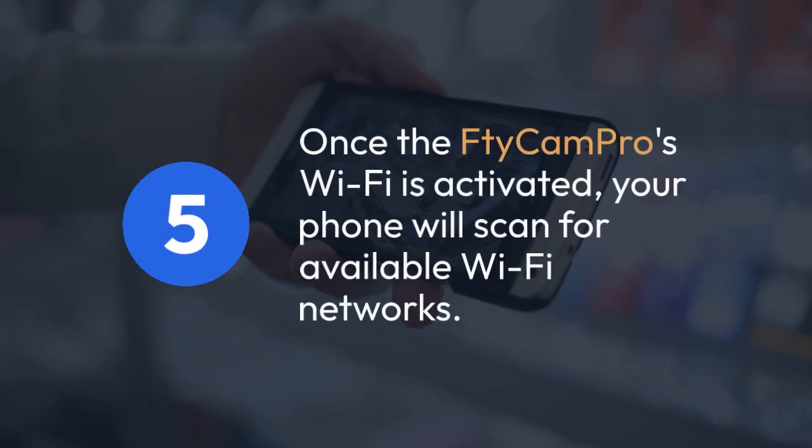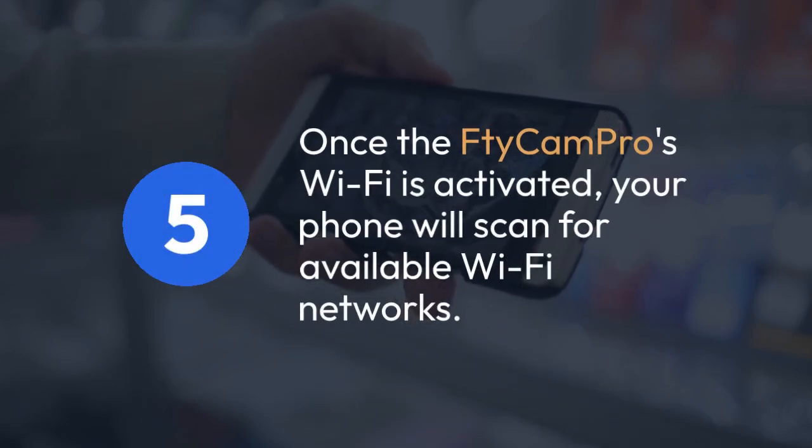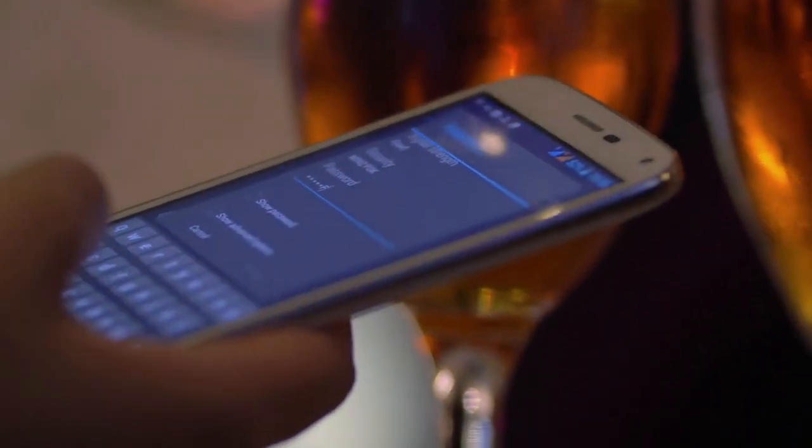Once the FadiCam Pro's Wi-Fi is activated, your phone will scan for available Wi-Fi networks. Select the network associated with your FadiCam Pro — the name will usually be similar to the camera's model number. You might need to enter a password; check the camera's instructions.